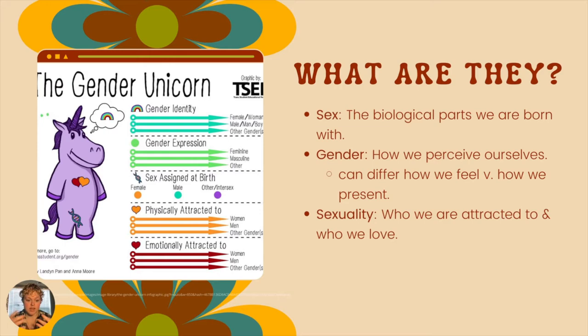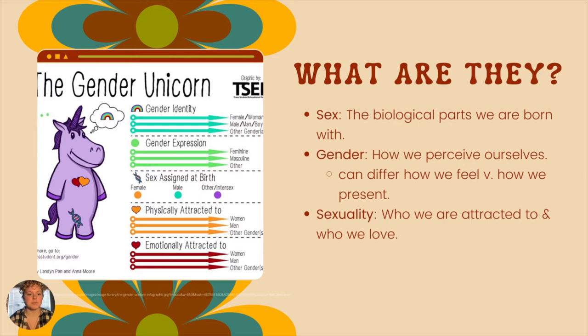You can feel and perceive yourself one way, but you might choose to present another way. For example, say you were born with the sex of a male, but you perceive yourself as feminine. Because of your family, lack of support, or your school, you may still choose to present yourself in a masculine way for fear of rejection and judgment. And then our sexuality is who we're attracted to and who we love. This diagram of the gender unicorn shows how gender identity is internal — that's how we perceive ourselves — and gender expression is how we actually portray ourselves and show to those around us and to the world.